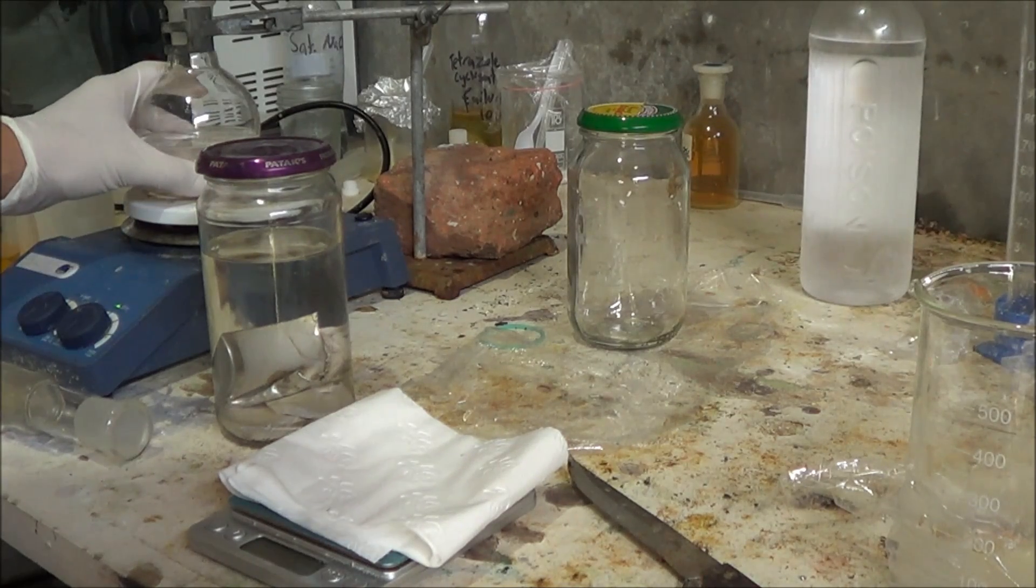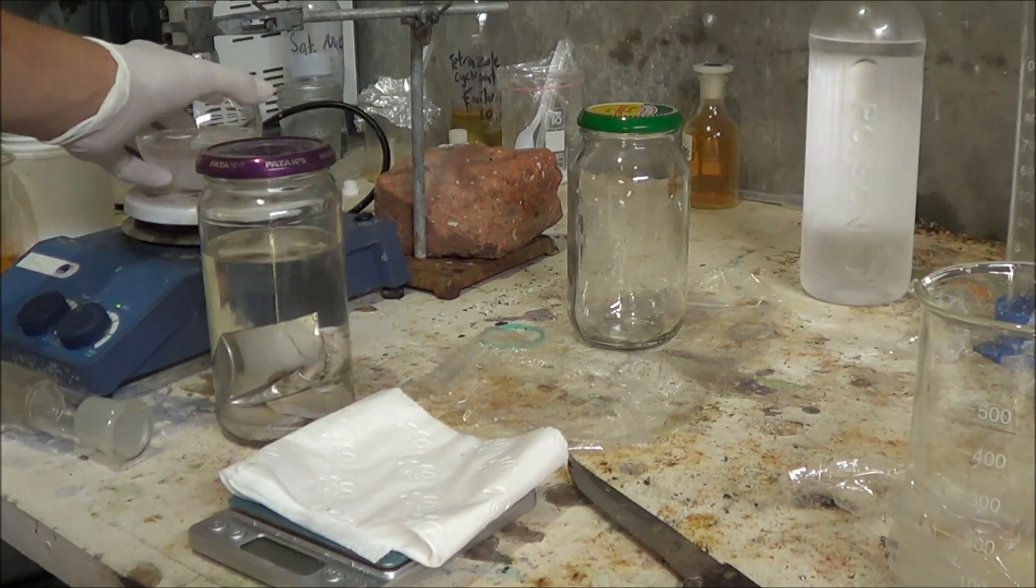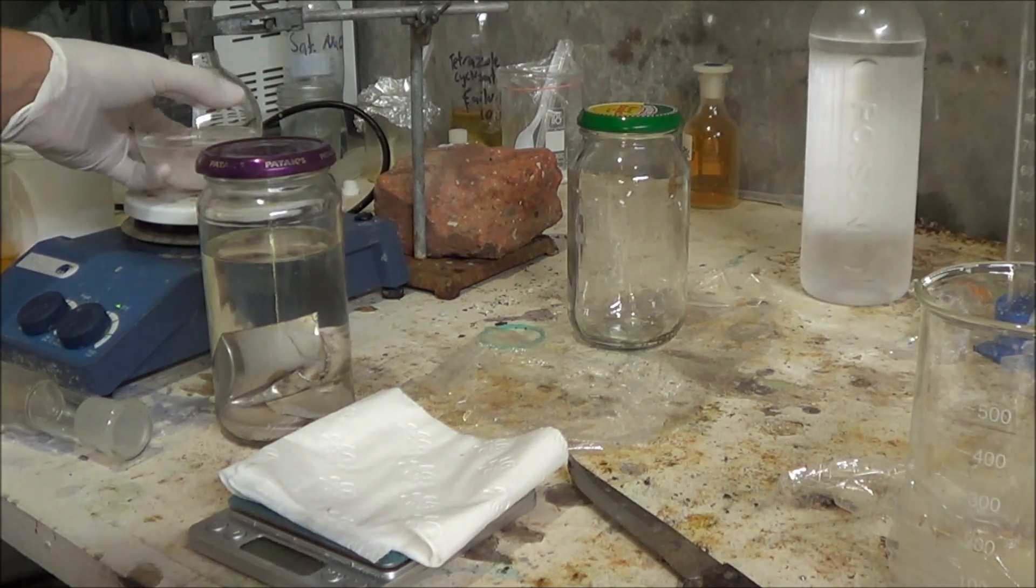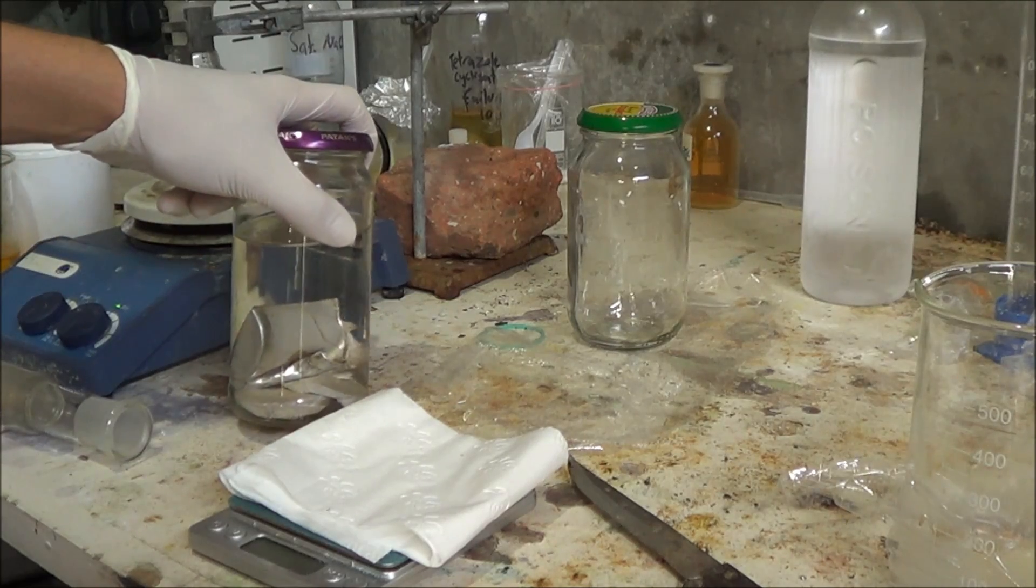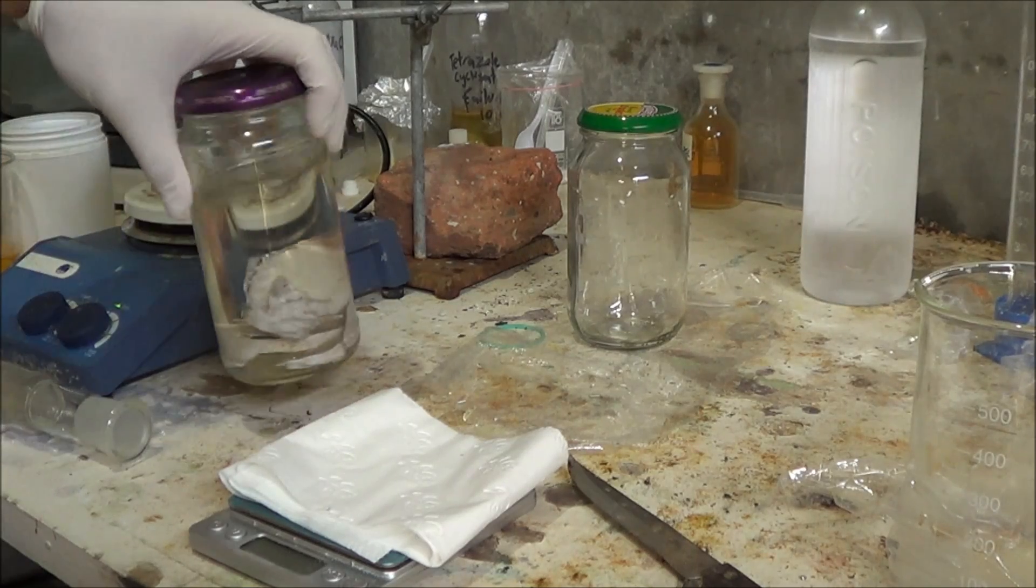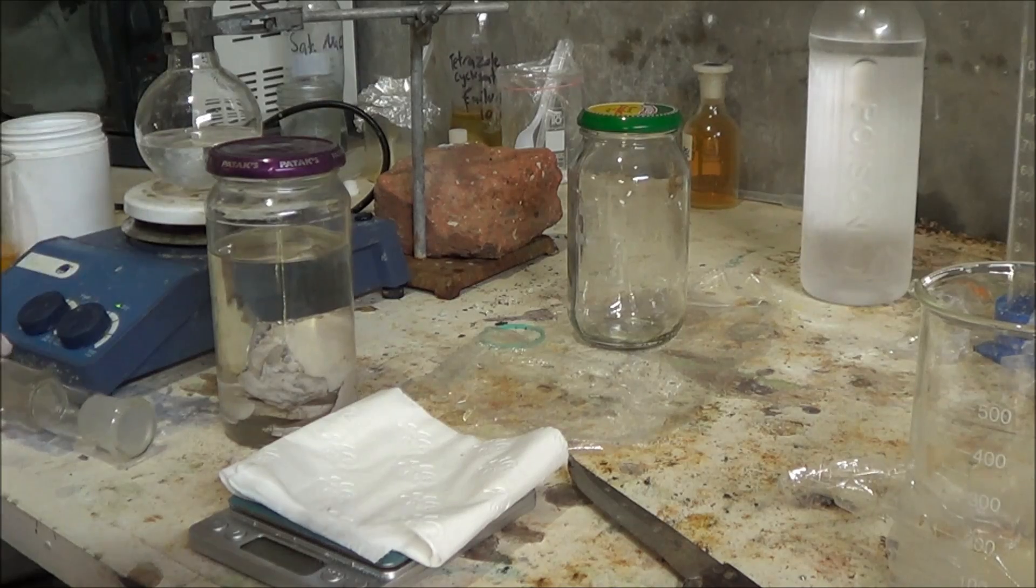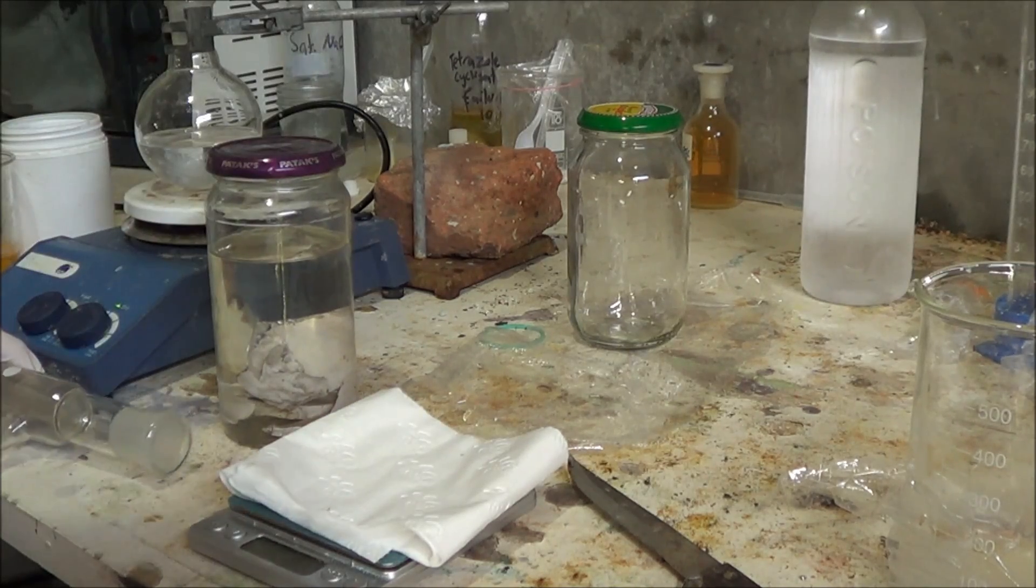So instead we have cold ethanol. We've got 100ml of it here in this flask. And we're going to set this up for reflux. And I'm going to grab 5g of the sodium, I'm going to dry off as much mineral oil as possible, cut them into sort of small pieces. And we're going to put the ethanol, put the condenser on, set up the water and watch it go.